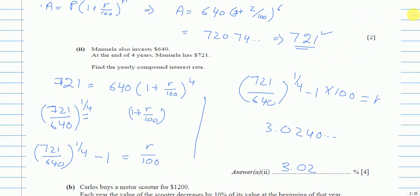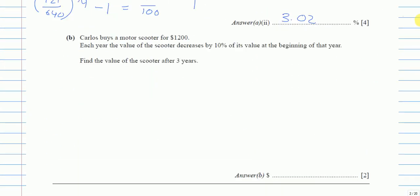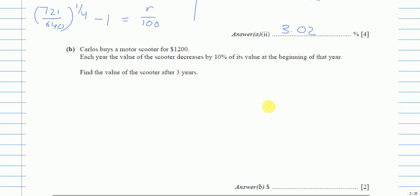Now part B. Carlos buys a motor scooter for $1,200. Each year, the value of the scooter decreases by 10% of its value at the beginning of that year. Find the value of the scooter after three years. Now there are several ways we can solve this. I will give you the very basic way.